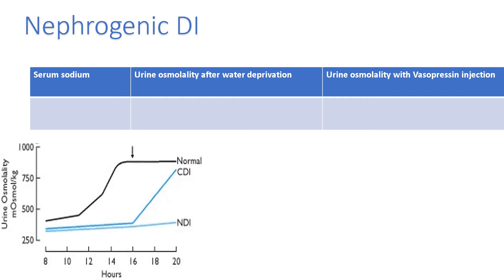At baseline, these patients are also excreting free water and not retaining it in the blood, so their serum sodium is high — their blood is concentrated instead of their urine. You get the idea.